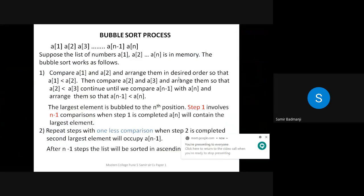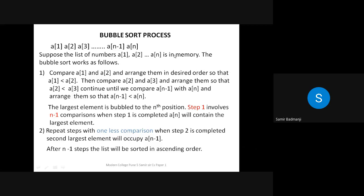Consider an array with elements a1, a2, a3 up to an, where a(n-1) is the second last element. For a list a1 to an in memory, bubble sort works by comparing the first element with the second. If the first is larger than the next, interchange them. If the first is smaller, it remains the same.